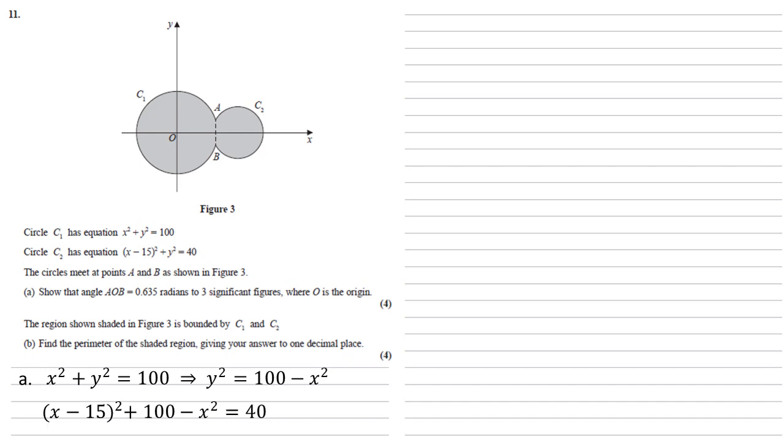We can substitute that into our equation for C2. So x minus 15 all squared plus 100 minus x squared equals 40. Expanding the brackets gives us x squared minus 30x plus 225 plus 100 minus x squared equals 40. The x squareds cancel and bringing 225 and 100 together, we get minus 30x plus 325 equals 40. So 30x equals 285, x equals 9.5.